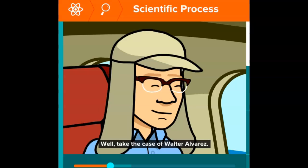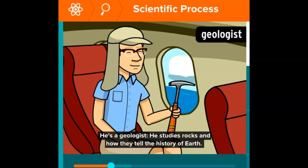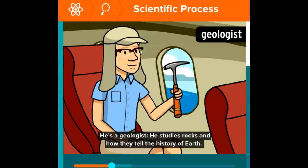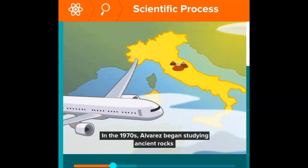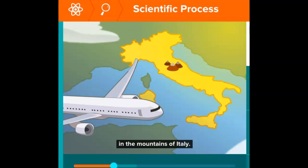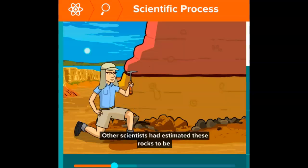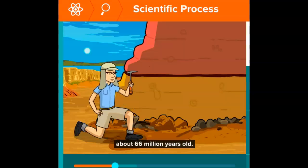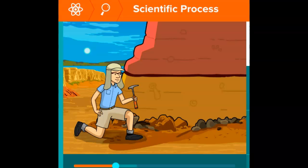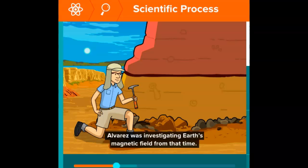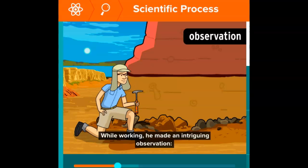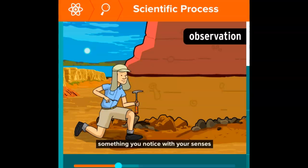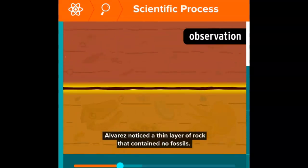Well, take the case of Walter Alvarez. He's a geologist—he studies rocks and how they tell the history of Earth. In the 1970s, Alvarez began studying ancient rocks in the mountains of Italy. Other scientists estimated these rocks to be about 66 million years old. Alvarez was investigating Earth's magnetic field from that time. While working, he made an intriguing observation—something you notice with your senses or measure with scientific instruments.